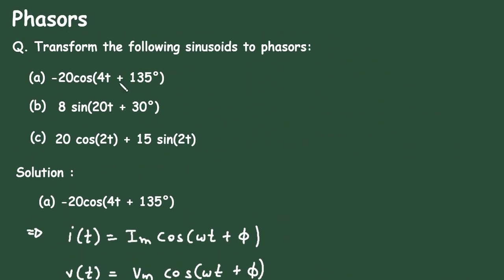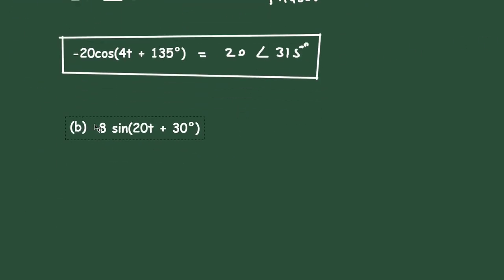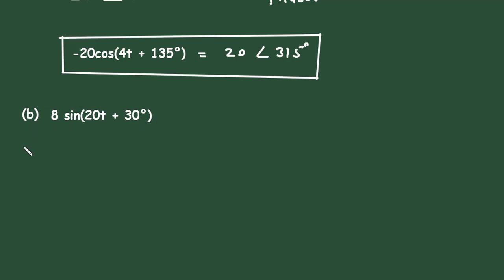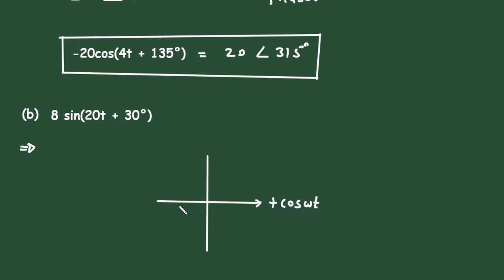Next is problem B. Again, this is not in standard form — it is in sine form and we need to convert it to cosine form. To convert from sine to cosine: +cos(ωt), −cos(ωt), +sin(ωt), and −sin(ωt) are positioned on the unit circle.